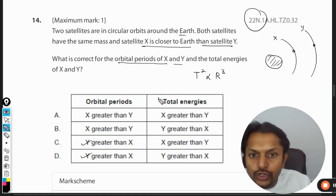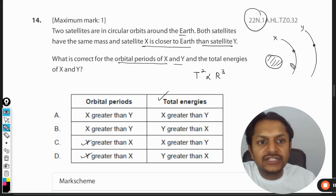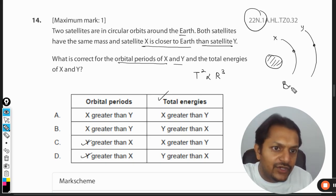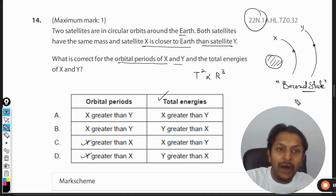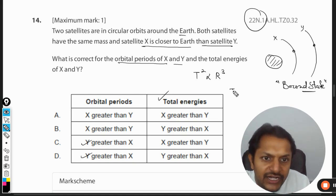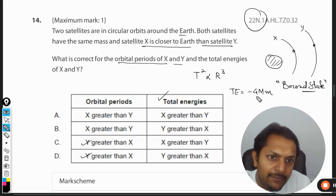This is done. Now we're moving to the total energies. In total energies, in the case of satellites, we use the concept of bound state. We have discussed this thing so many times - now I believe you would be knowing this bound state. In bound state, the total energy of the satellite is given by -GMm divided by 2R.